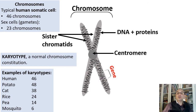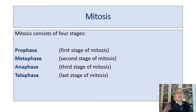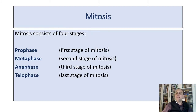In order to make sure everything is copied exactly and divided evenly between daughter cells, a series of four phases occurs in the nucleus. Here are those stages: prophase, the first stage of mitosis; metaphase, the second stage; anaphase, the third stage; and telophase, the last stage of mitosis.